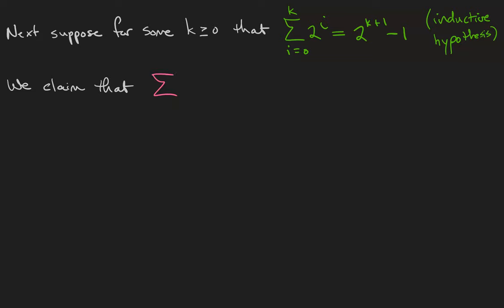We claim that the sum from i=0 to k+1 of 2^i is equal to 2^(k+2) - 1. This sentence, by the way, is not usable. We are not allowed to make use of the statement because we haven't proven it to be true yet. We have to show that it's true. So what I'm going to do is I'm going to start with the left side of the statement and show that it has to be equal to the right side using the recursive property of summation.